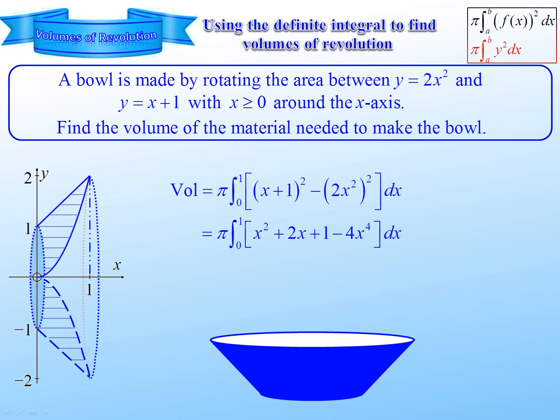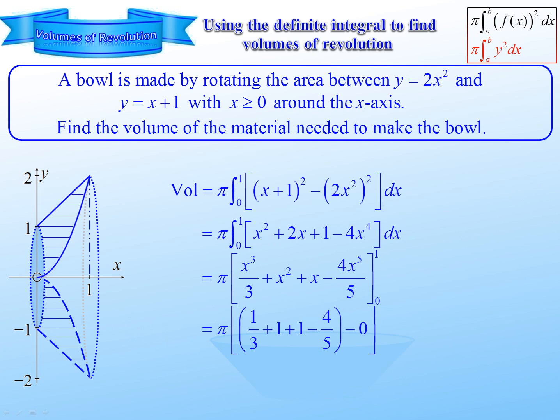Simplifying. Standard integral. There we are. Substitute 1. Subtract, substitute 0. And that gives us 23 pi divided by 15. There it is.